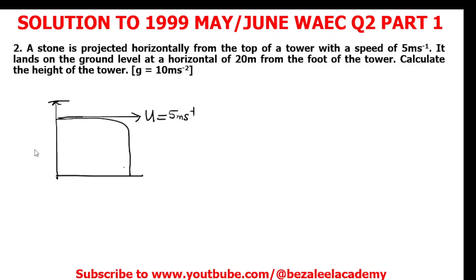The distance from the foot of the tower to the point of landing of the stone is 20 meters. That is the implication of what they are asking. The question asks us to calculate the height of the tower.